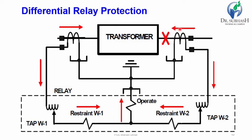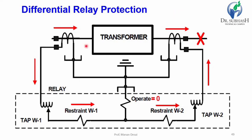When an internal fault occurs, the CT2 current flows from the opposite side and enters the relay. If the difference between I1 (CT1 current) and I2 (CT2 current) is larger than the predetermined value, the operating coil will operate. This is the normal behavior of differential protection against internal faults.